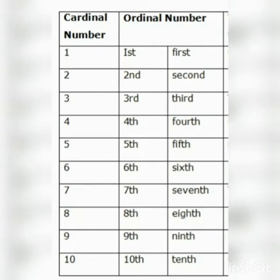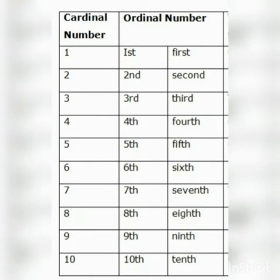Like you can see on the screen: ordinal number for cardinal number 1 is 1st, for 2 is 2nd, for 3 is 3rd, for 4 is 4th, for 5 is 5th, for 6 is 6th, for 7 is 7th, for 8 is 8th, for 9 is 9th, and for 10 is 10th.